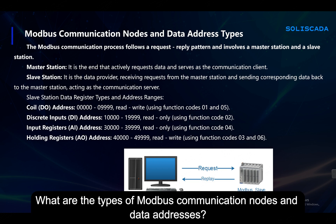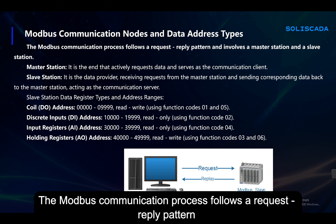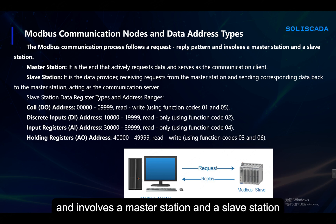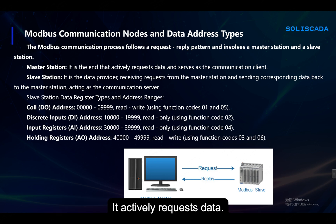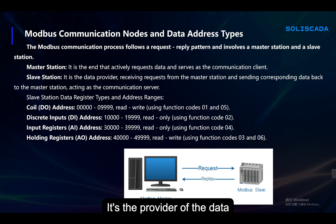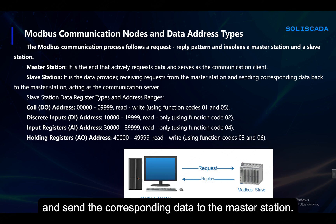What are the types of Modbus communication nodes and data addresses? The Modbus communication process follows a request-reply pattern and involves a master station and a slave station. The master station can be considered a client side — it actively requests data. The slave station is a data server; it's the provider of the data. It accepts the request from the master and sends the corresponding data back to the master station.